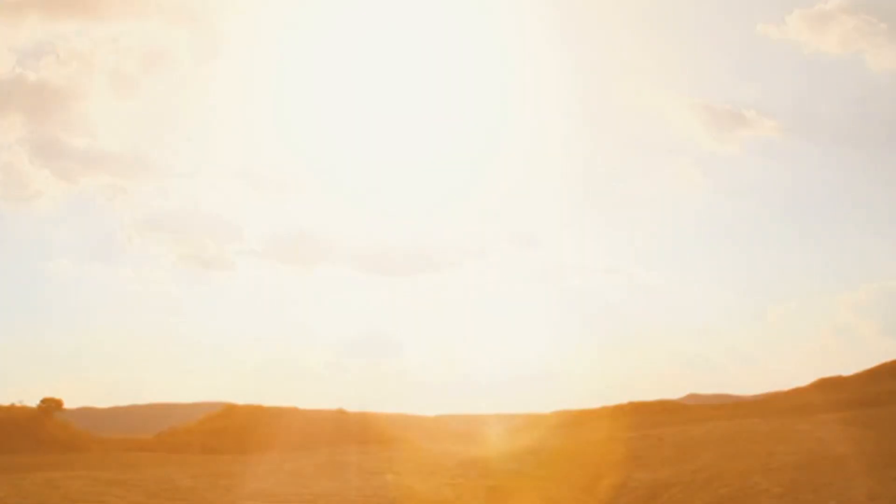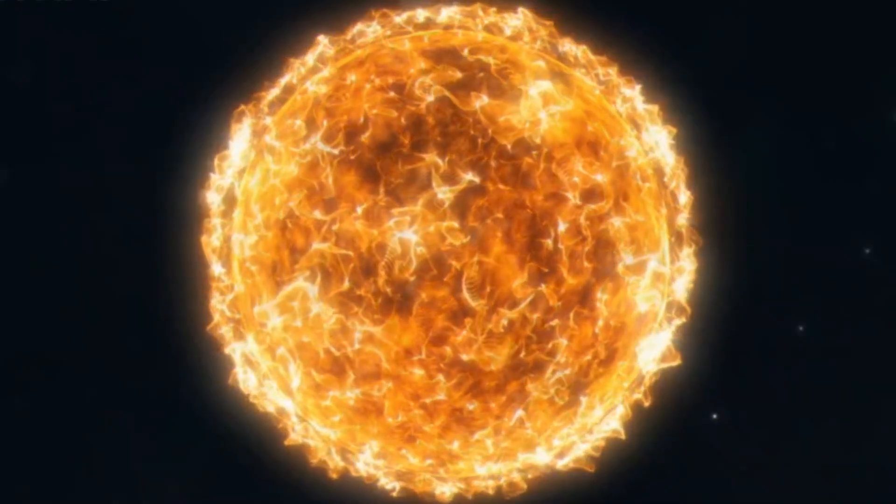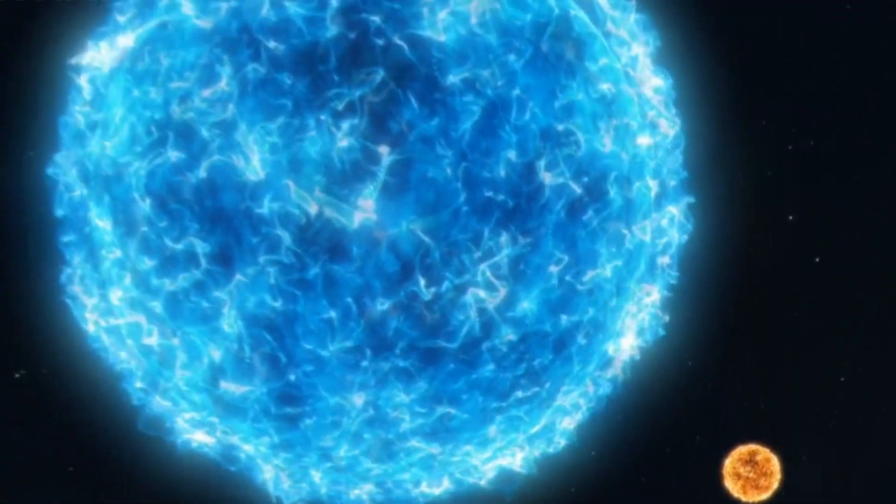But LHS 3154b breaks these rules, orbiting a star nine times smaller than our Sun. A star this tiny shouldn't be able to form such a massive planet, which is why its existence is so surprising.